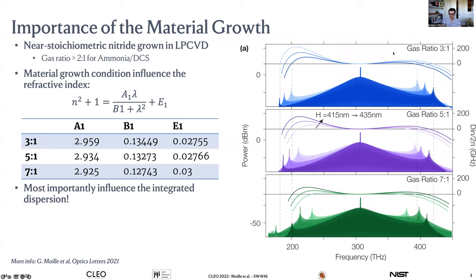The integrated dispersion gives you D₂, which determines the flatness of your comb, and wherever it crosses zero defines the width of your comb and the dispersive wave location. As you can see, between a gas ratio of 3:1 and 7:1 with the exact same geometric properties, the comb changes significantly.